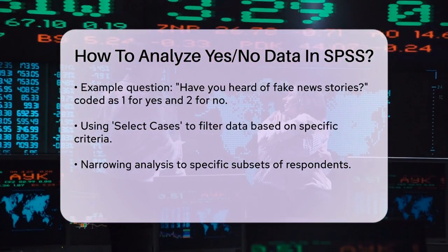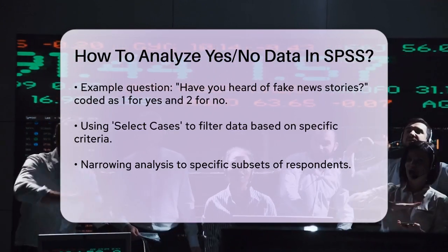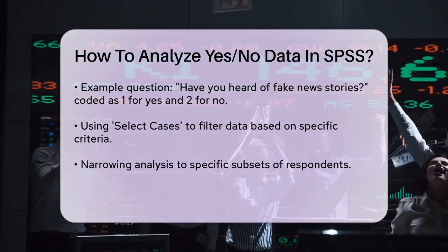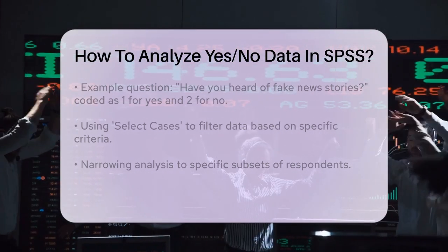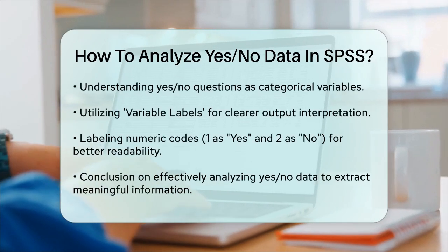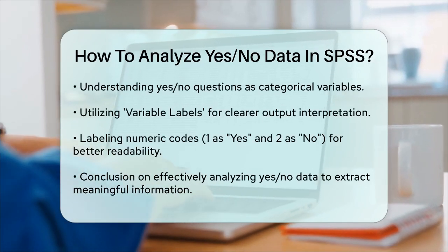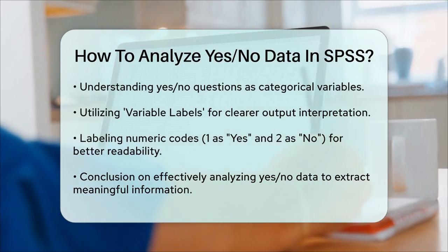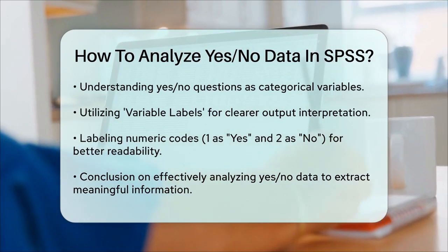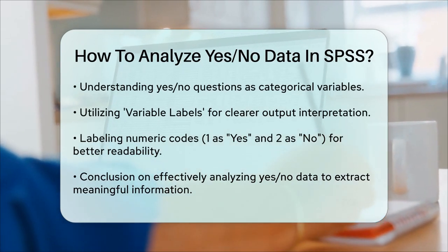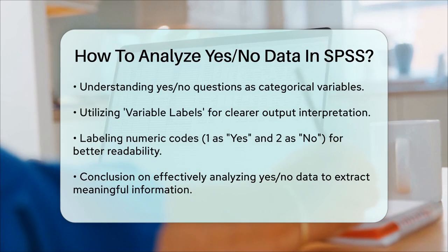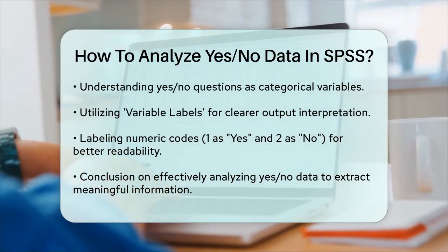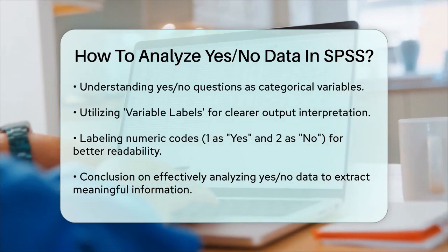When interpreting your results, remember that yes-no questions are categorical variables. You can use the Variable Labels option to assign text labels to your numeric codes, making it easier to read and understand the output. For example, you can label one as yes and two as no, so that your output tables show these labels instead of just the numbers.